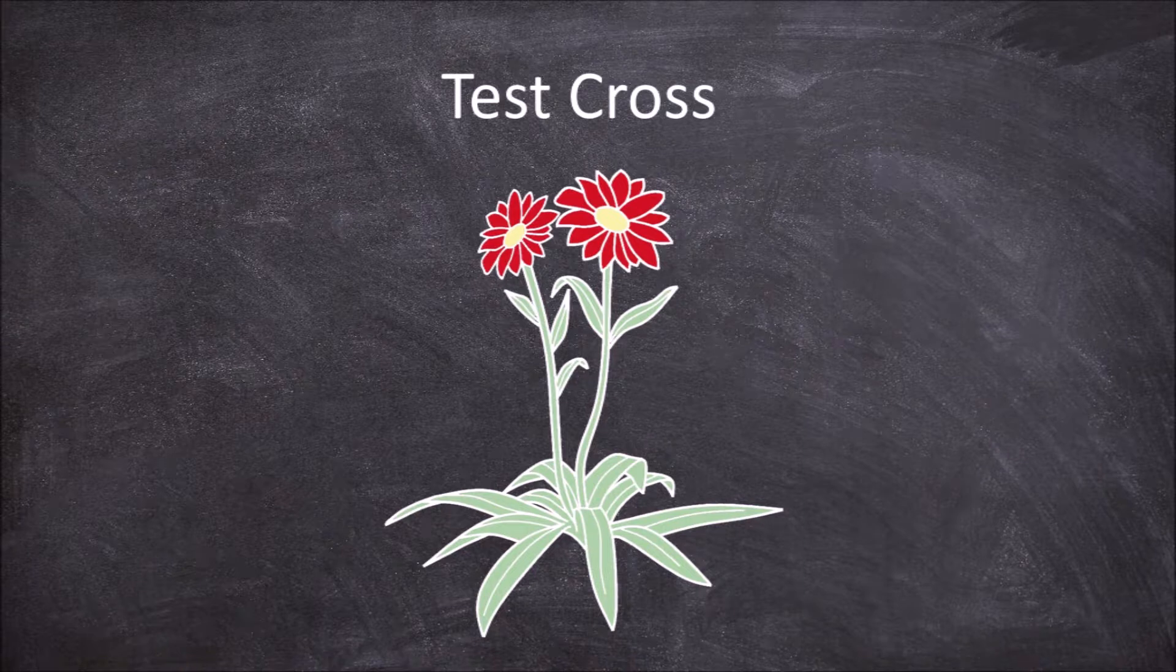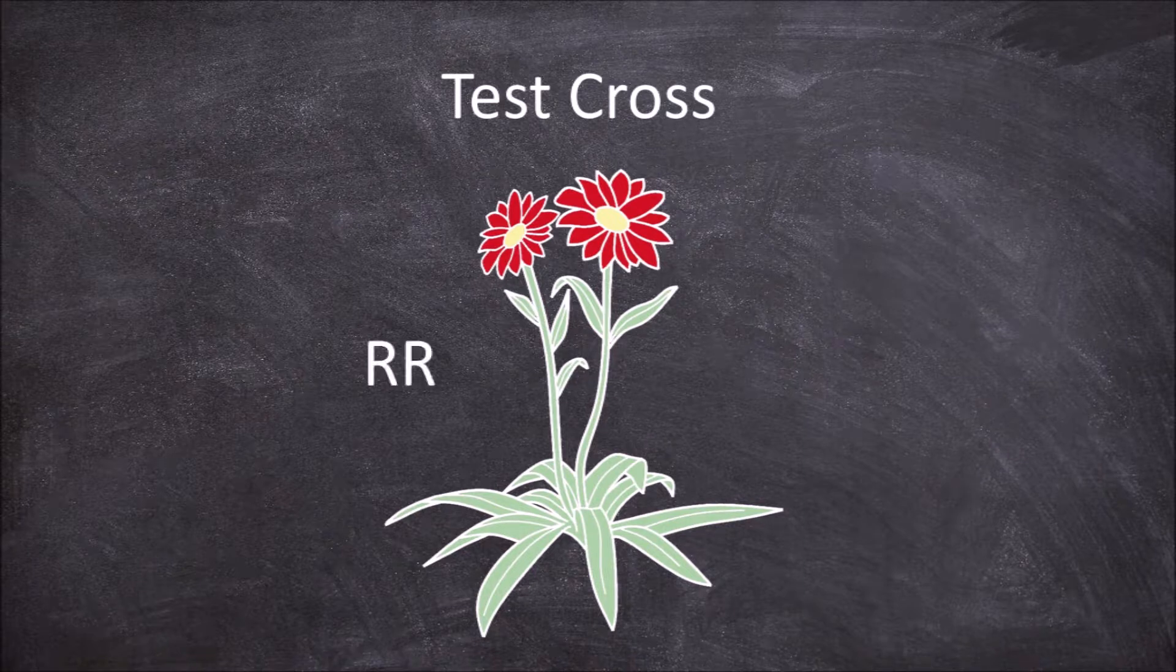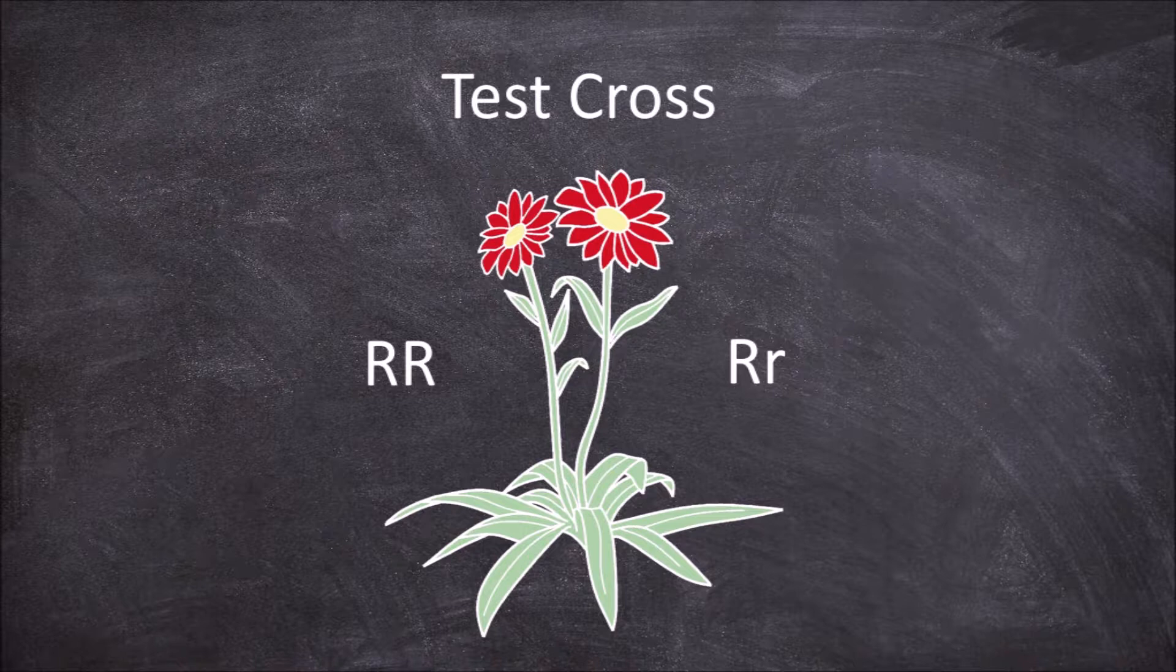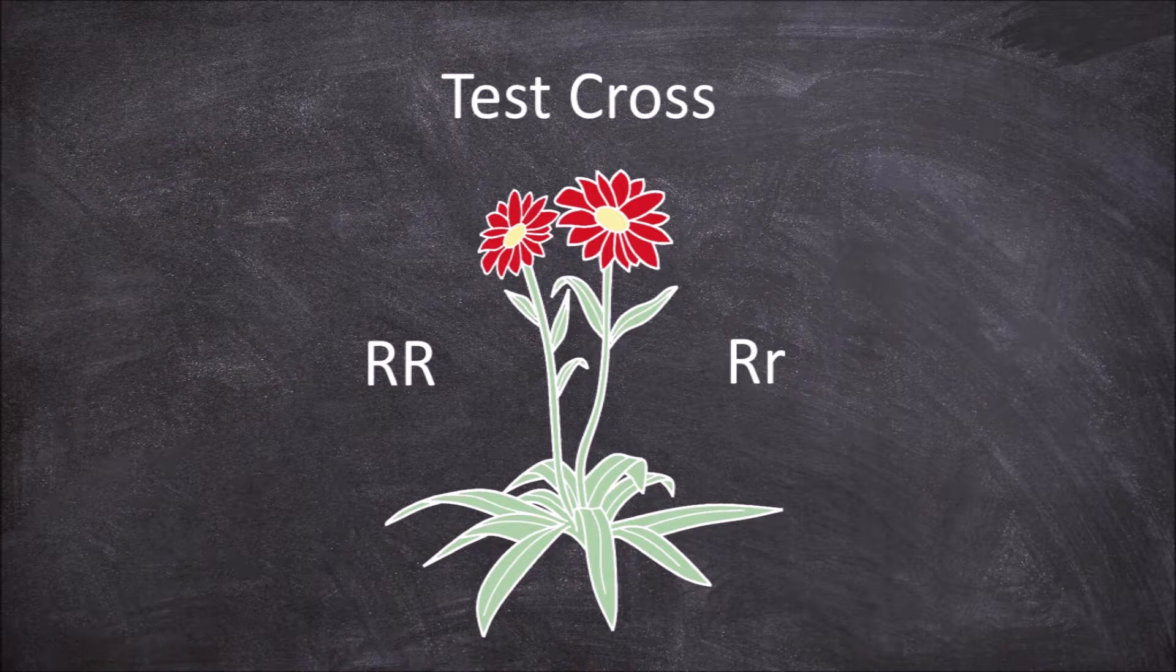But if a plant has red flowers it could be either big R big R or big R little r, as the big R for red flowers is dominant over the little r for white flowers. Test crosses allow a way to determine zygosity of whether a parent is homozygous dominant big R big R or heterozygous big R little r by looking at their offspring.